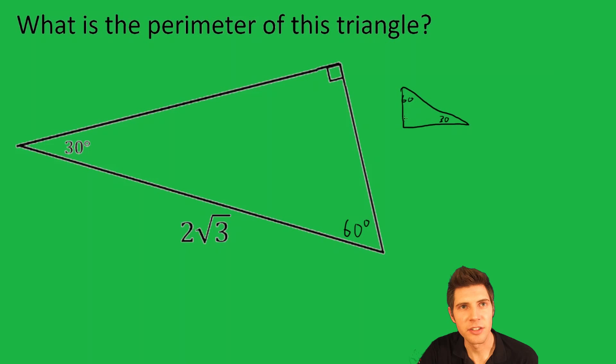If this is the 30, this is the 60, and the 90, if you call this side x, the hypotenuse is always double the shorter side, and the longer leg is always square root of three times x. These are the generic forms.